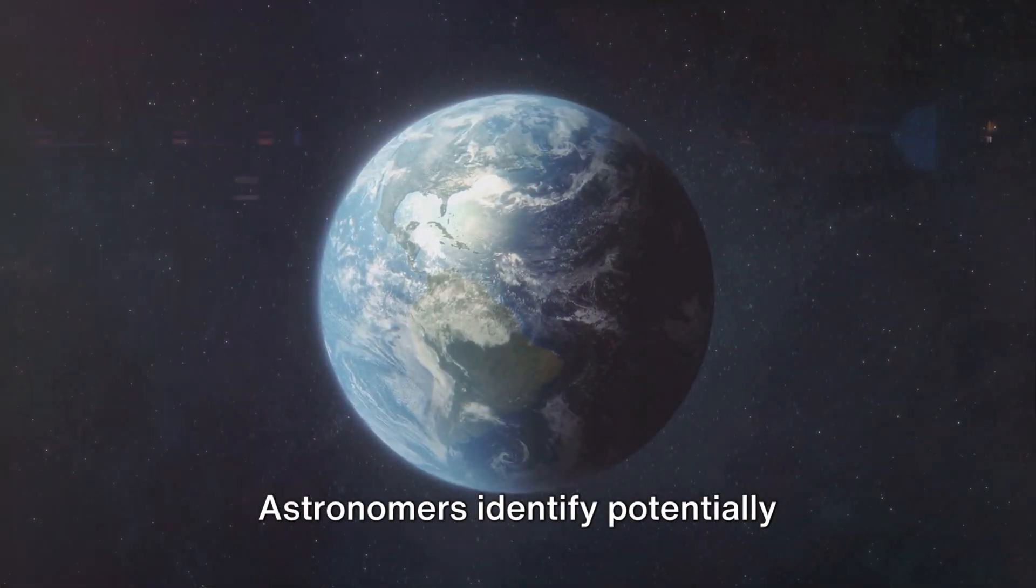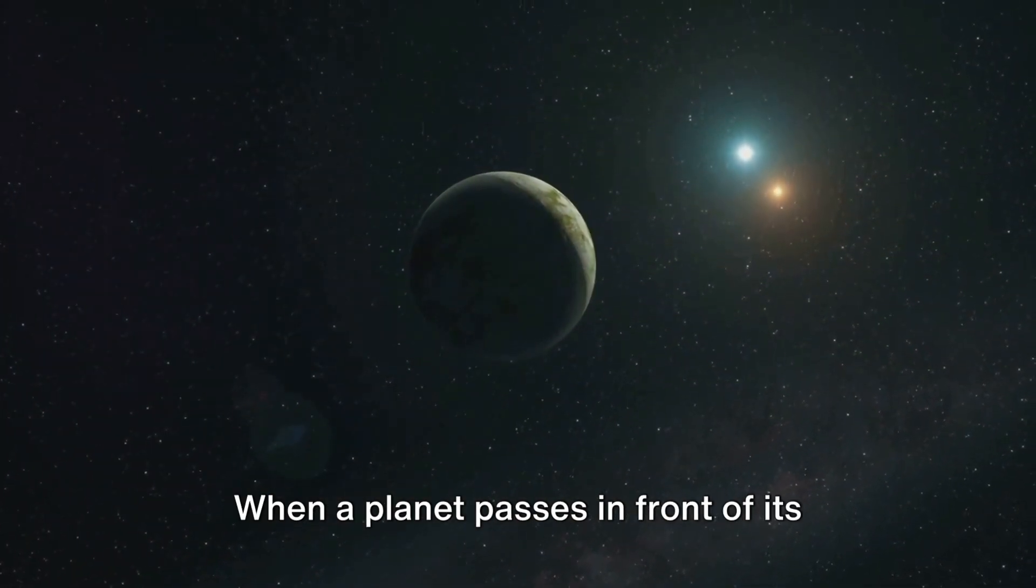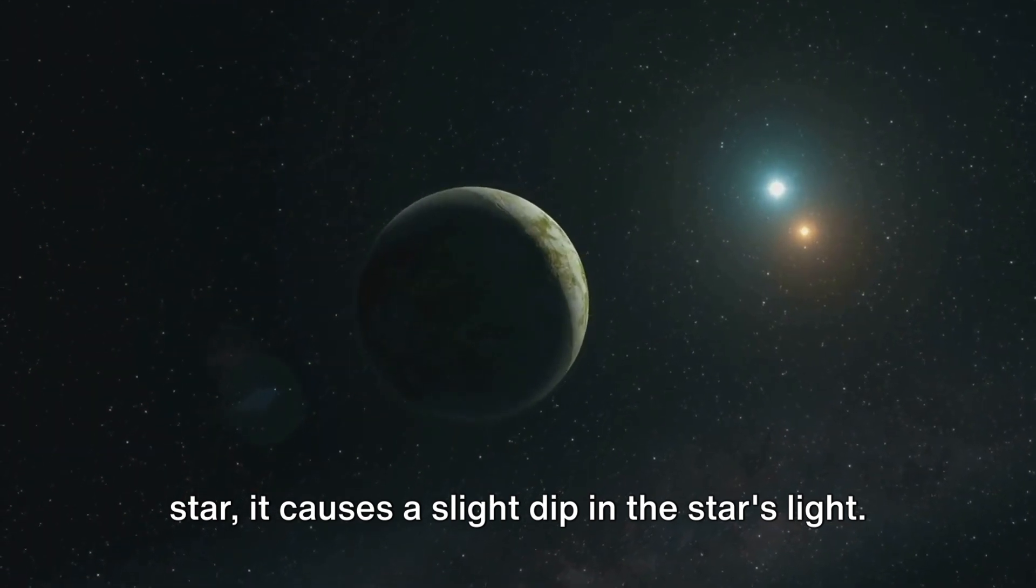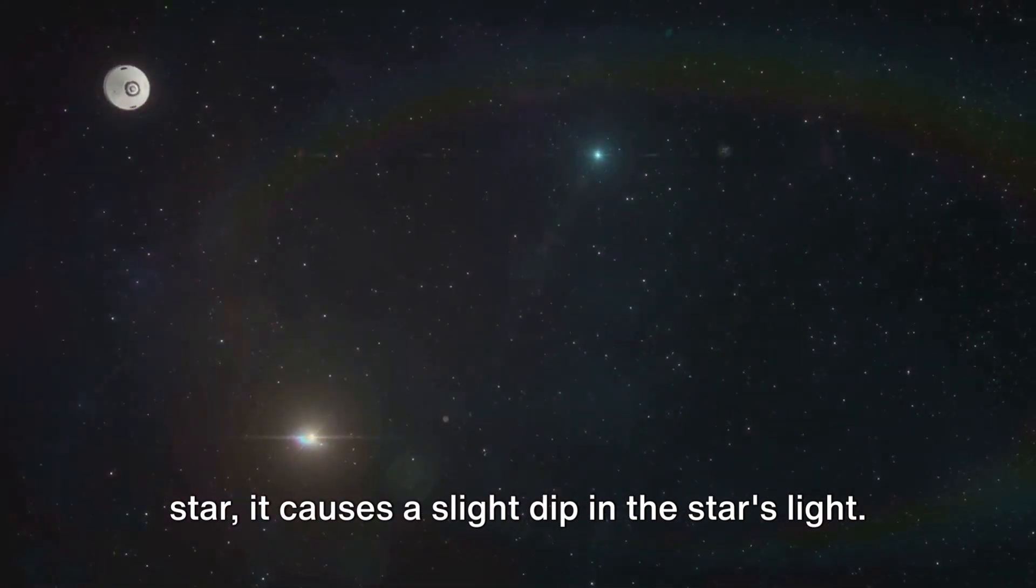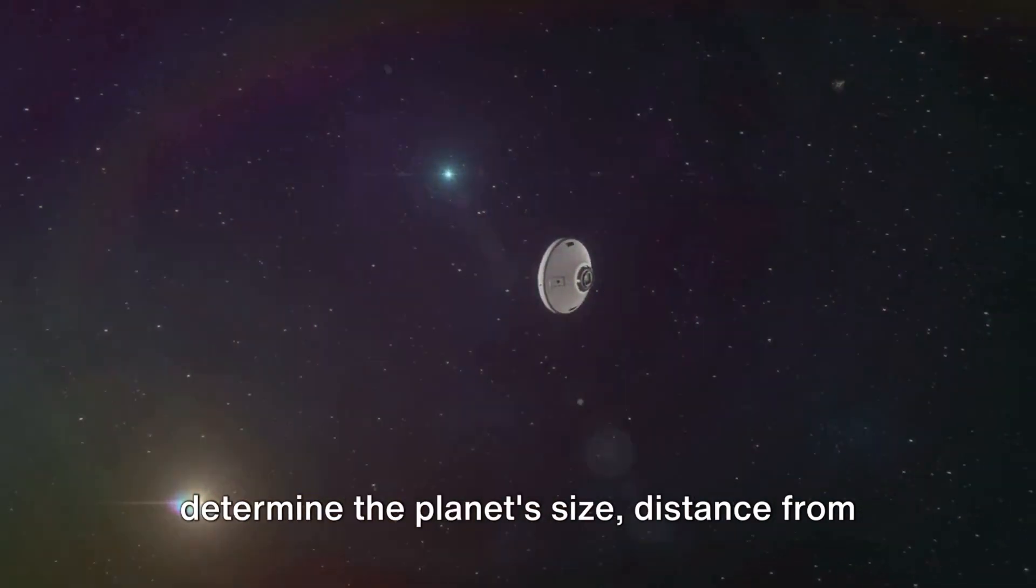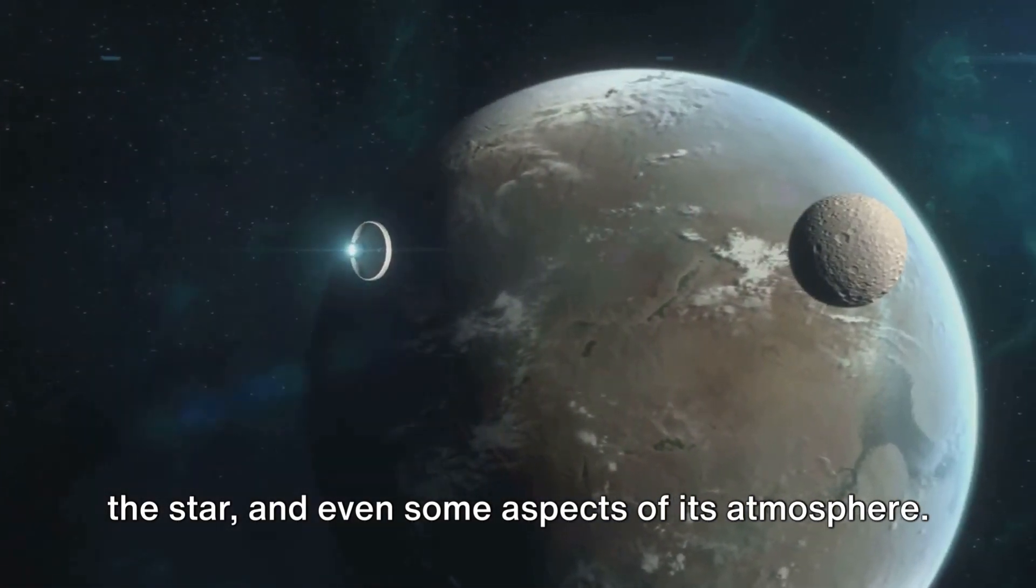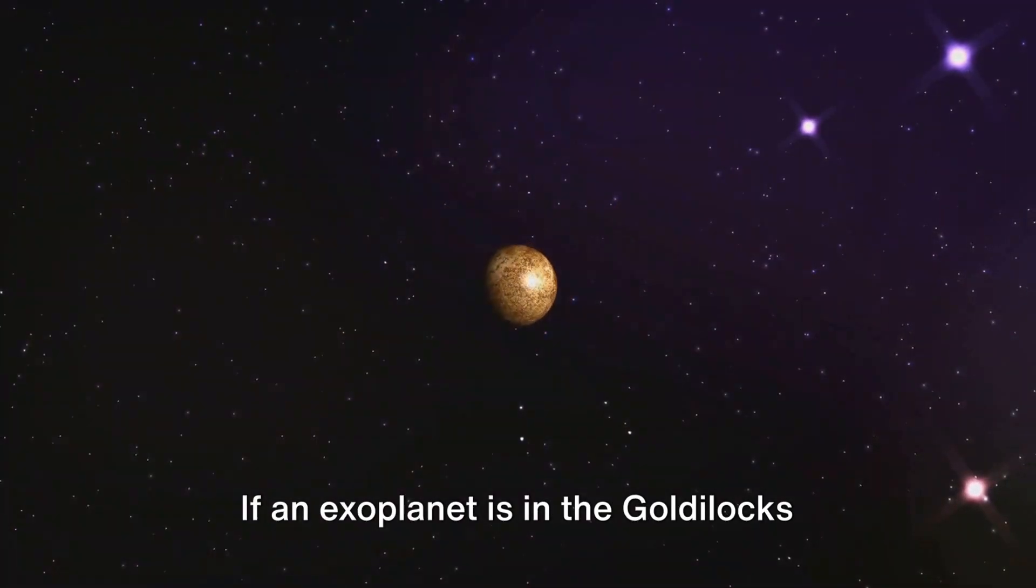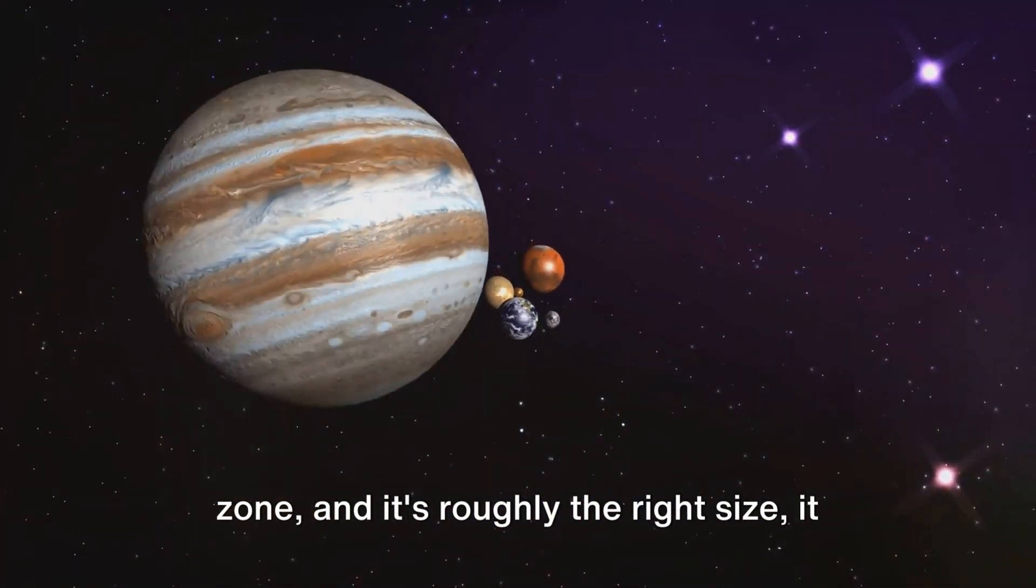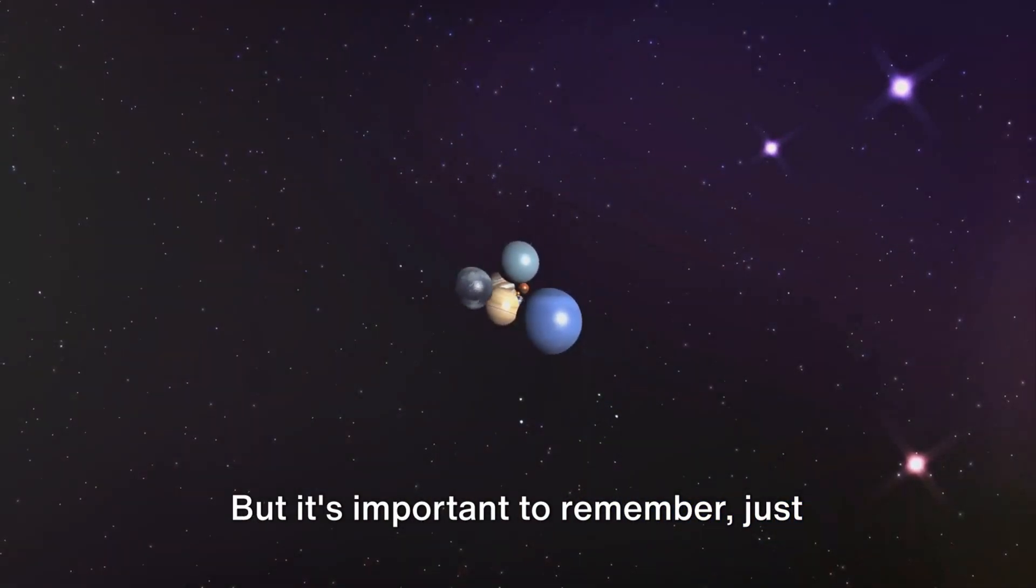Astronomers identify potentially habitable exoplanets by examining the light from their host stars. When a planet passes in front of its star, it causes a slight dip in the star's light. By analysing this dip, scientists can determine the planet's size, distance from the star, and even some aspects of its atmosphere. If an exoplanet is in the Goldilocks zone, and it's roughly the right size, it becomes a candidate for further study.